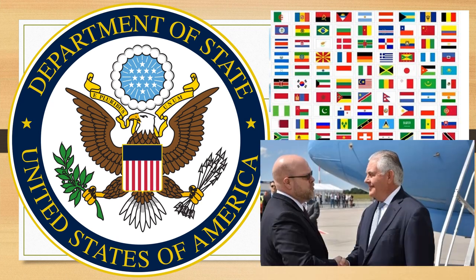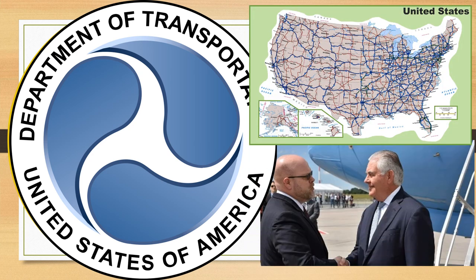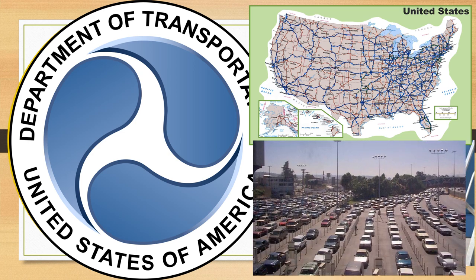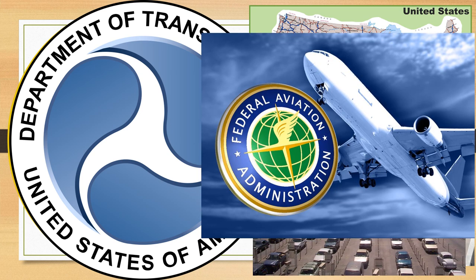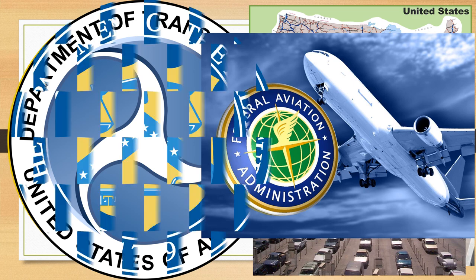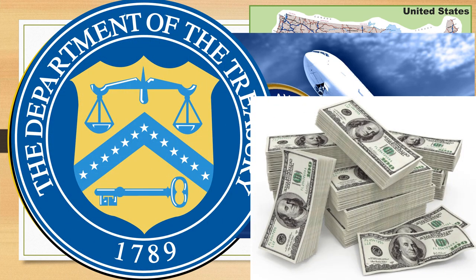The Secretary of State is the president's top foreign advisor. The Department of Transportation makes sure that there is fast and safe transportation around the United States, which is important for our economy and quality of life. They manage federal highways and the Federal Aviation Administration (FAA), which makes sure that flying is safe.